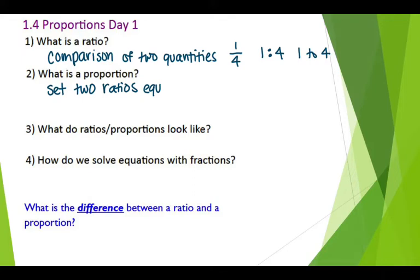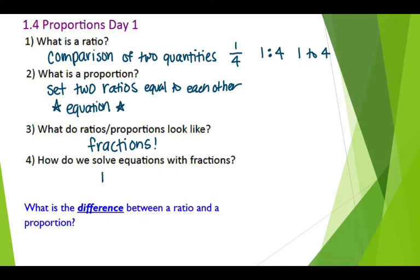The key is to have an equation. So when you set two ratios equal to each other. So we are having an equation. What do ratios and proportions look like? They look like fractions most of the time. And how do we solve fractions? We solve equations with fractions by multiplication. So we are going to be doing a lot of multiplication as we solve different proportions. What is the difference between a ratio and a proportion? The key difference is a proportion is an equation. The proportion is an equation.